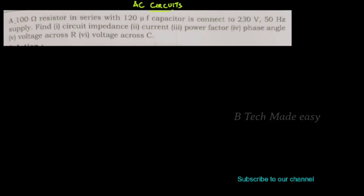A 100 ohm resistor in series with a 120 microfarad capacitor is connected to a 230 volt, 50 hertz supply. Find: first, circuit impedance; second, current; third, power factor; fourth, the phase angle between voltage and current; and fifth, the voltage across the resistor and capacitor.